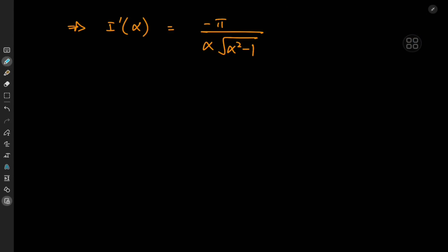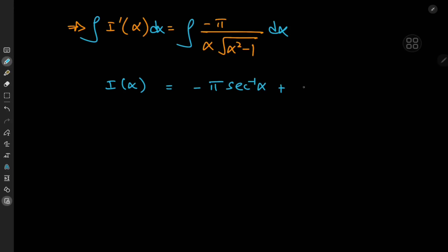Now that we have the derivative of I completely in terms of alpha, we integrate with respect to alpha to recover the integral function. Using a table of antiderivatives — an extremely overpowered technique — we find that the antiderivative of -pi/(alpha times sqrt(alpha² - 1)) is -pi times the inverse secant of alpha, plus a constant of integration C.